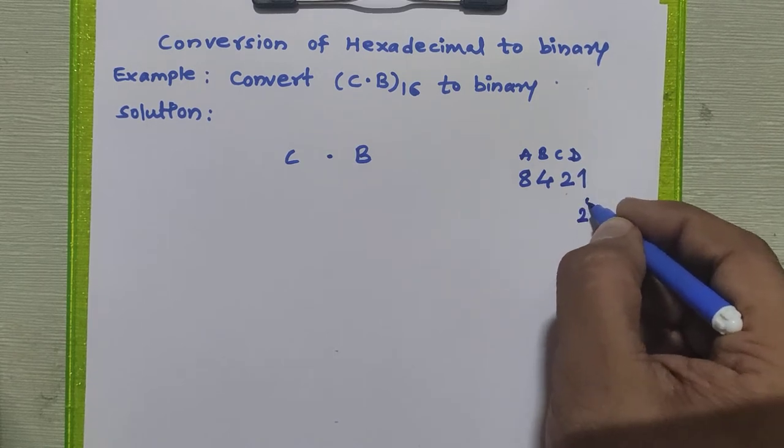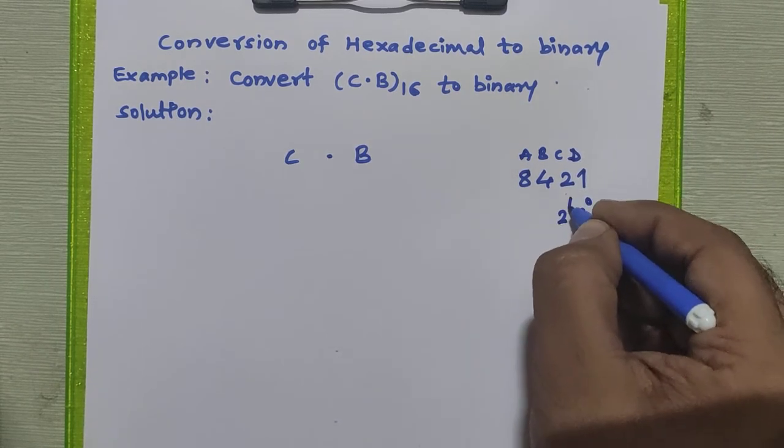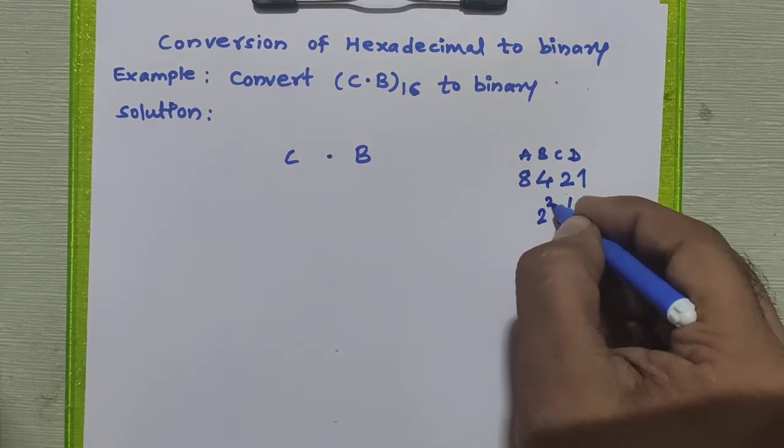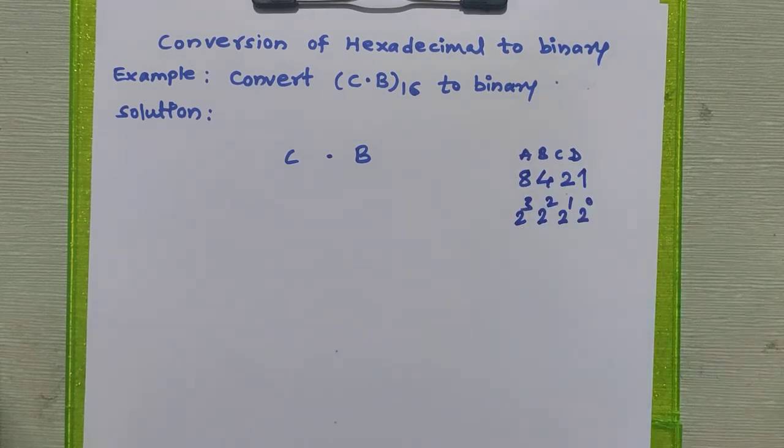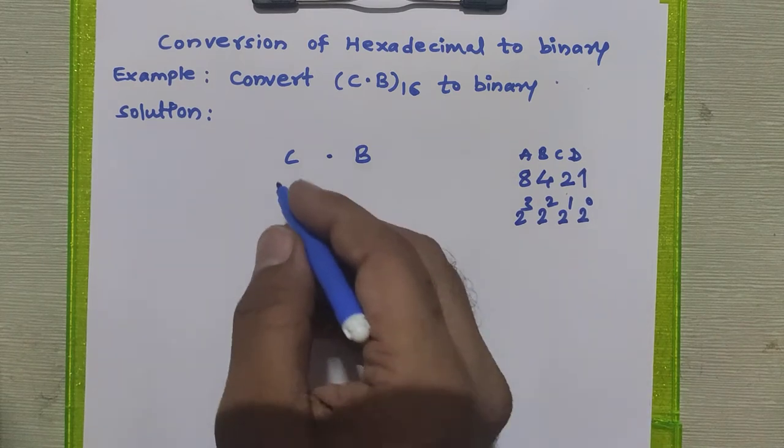2 raise to 0 is 1, 2 raise to 1 is 2, 2 raise to 2 is 4, and 2 raise to 3 is 8. Now what is this in hexadecimal C?